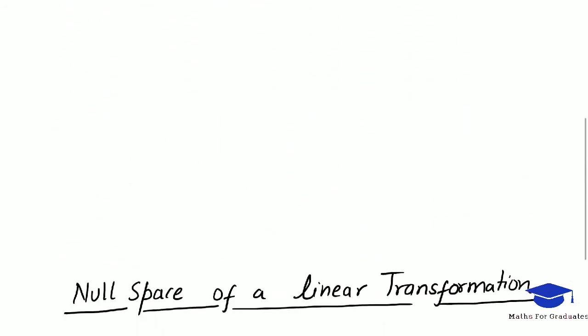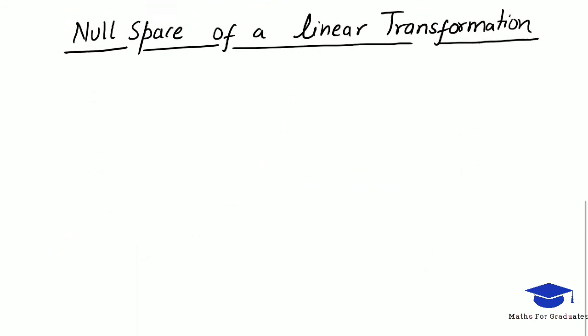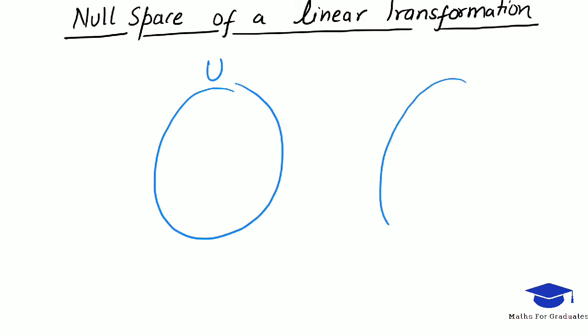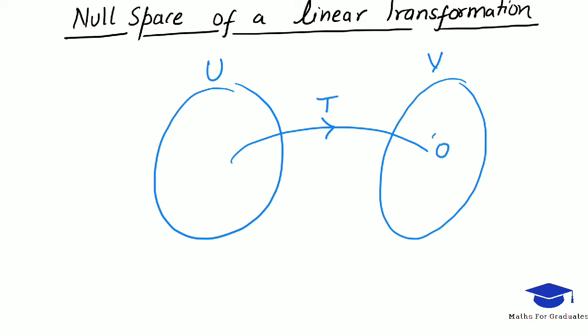Now, the null space of a linear transformation. Again we have vector space U and vector space V, and a linear transformation T from U to V. And we know that in a vector space there is a zero vector.